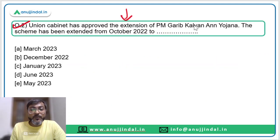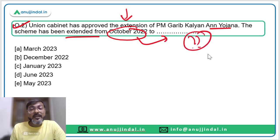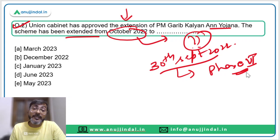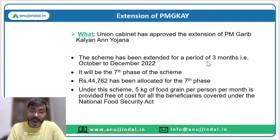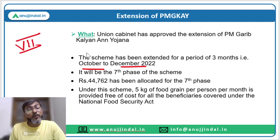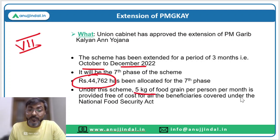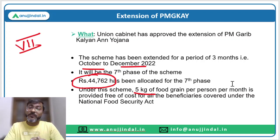Question two: the Union Cabinet has approved the extension of Pradhan Mantri Garib Kalyan Anna Yojana. Phase six of this scheme ended on 30th September 2022, and the Union Cabinet has approved its extension from October 2022 to December 2022 — this will be the seventh phase. This scheme was launched during the COVID-19 pandemic. In the seventh phase, rupees 44,762 crore has been allocated, and five kg of food grain per person per month is provided free of cost to all beneficiaries under the National Food Security Act of 2013.